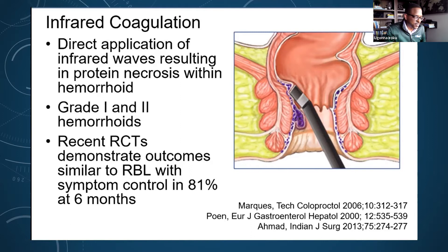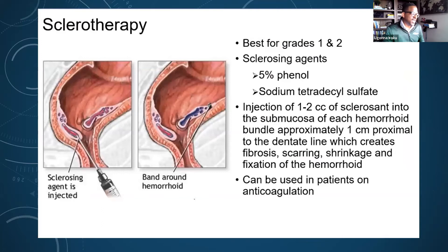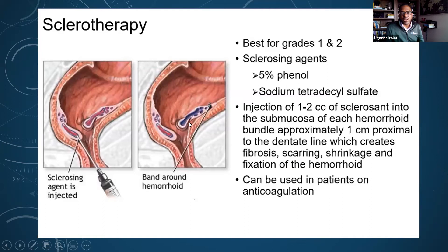There is also something called office sclerotherapy that was used more in the past. This involves injecting a needle into the internal hemorrhoid area with sclerosing agents including phenol or sodium tetradecyl sulfate, with the idea of cutting off those blood vessels that cause the hemorrhoids. In our office, we find that patients tolerate infrared coagulation better, so we don't offer sclerotherapy, but it's something you should be aware of.